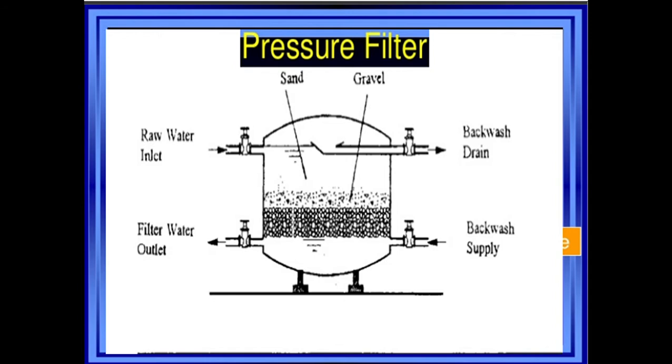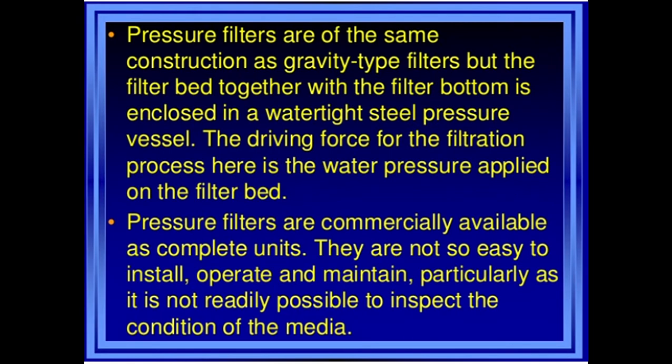The diagram shows the gravel and sand bed, backwash drain, backwash supply, and filtered water outlet. Pressure filters are of the same construction as gravity type rapid sand filters, but the filter bed together with the filter bottom is enclosed in a watertight steel pressure vessel. The driving force for the filtration process is the water pressure applied on the filter bed.